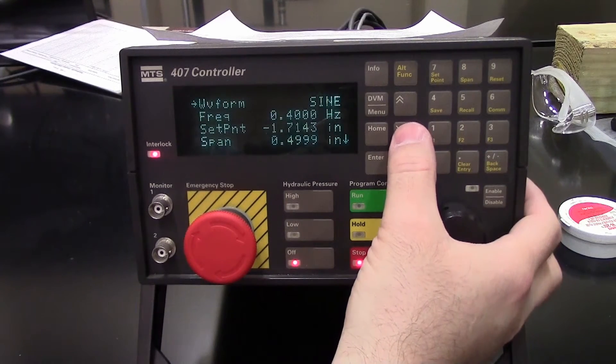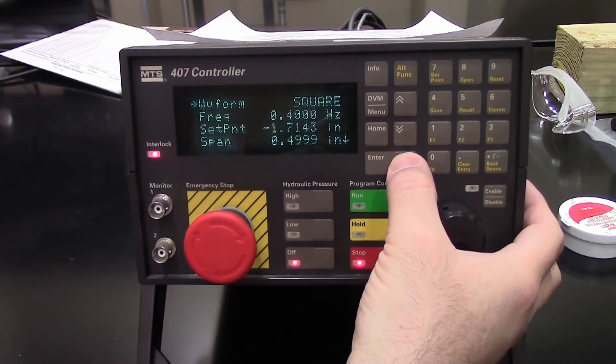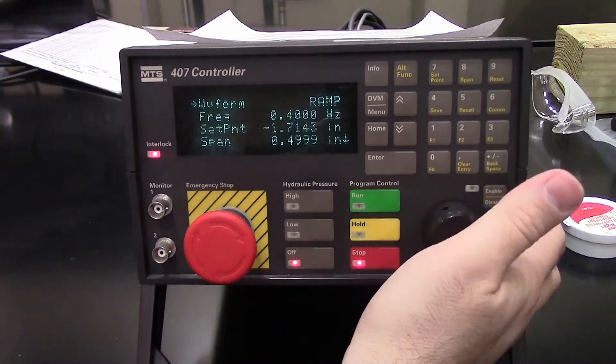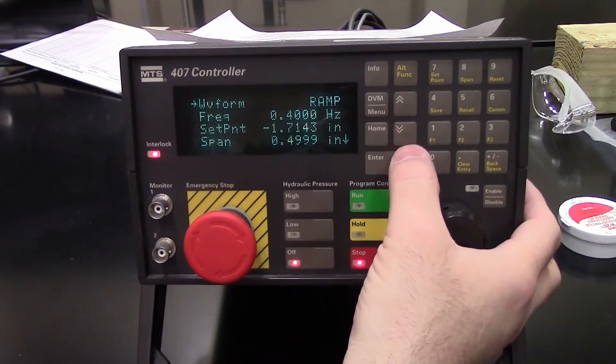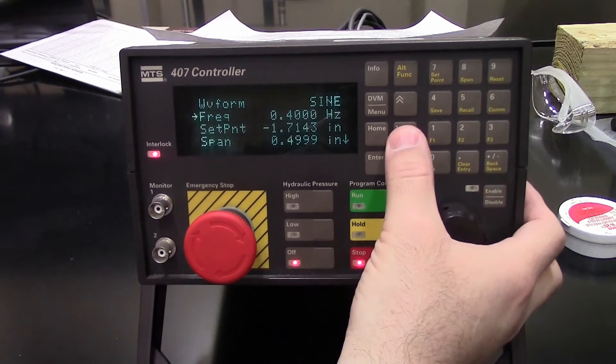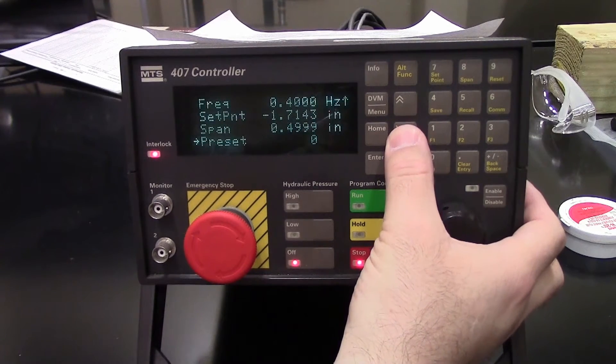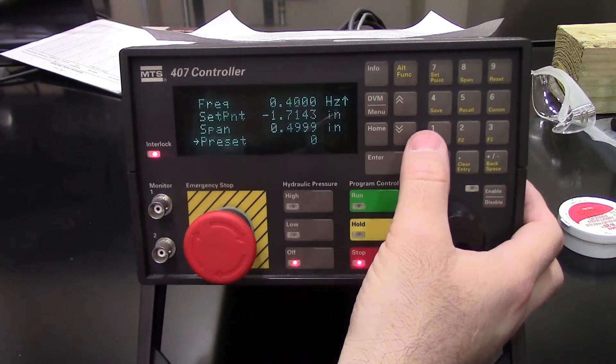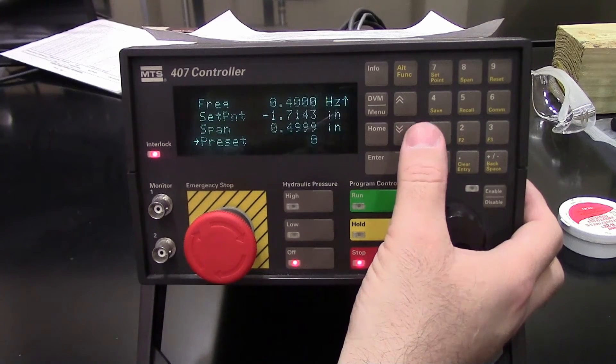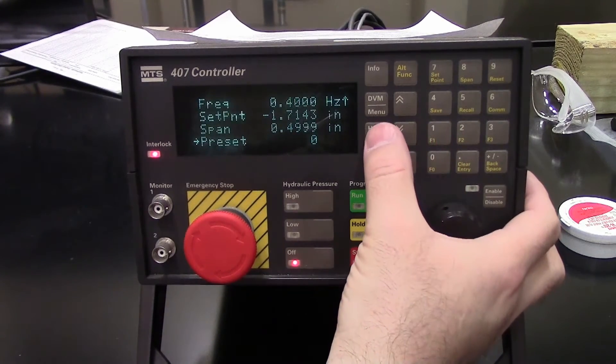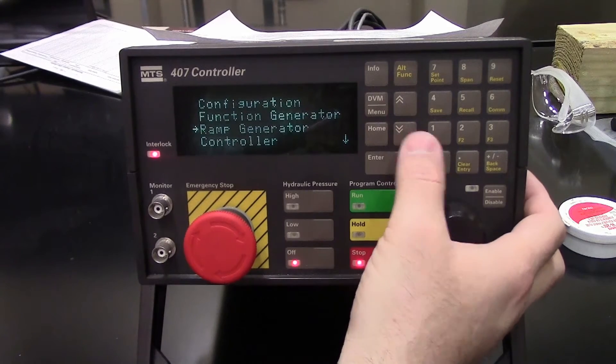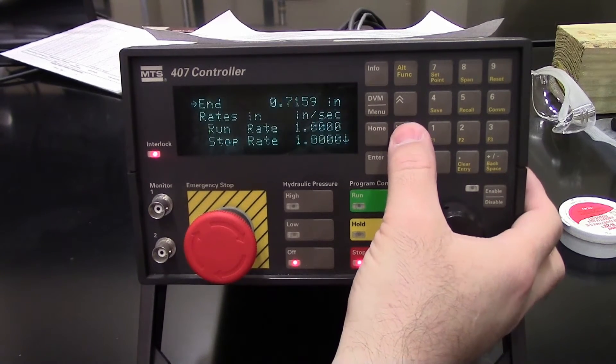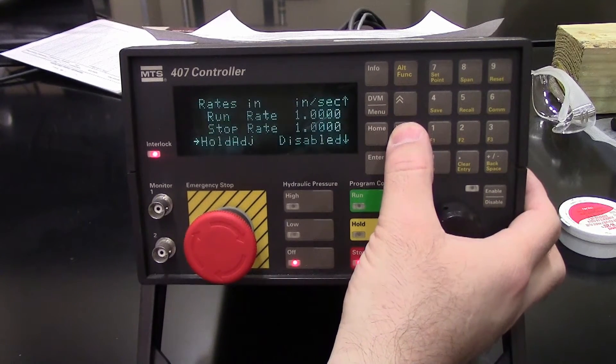Pressing home gets you to the menu. Function generator is where you can change it from sine wave to different shapes. You can have an external signal using an input. Frequency set point and span. A preset is where it will stop and pause the testing for you at a certain cycle count. Ramp generator just specifies the inputs for the ramp.